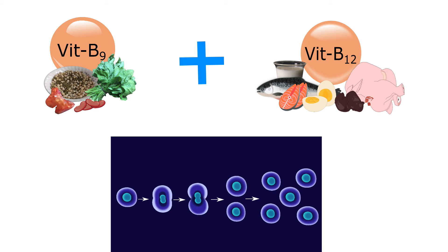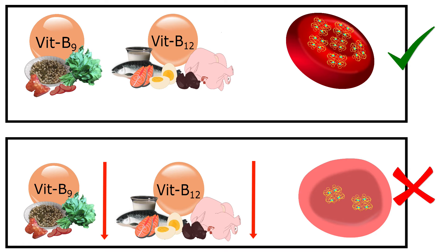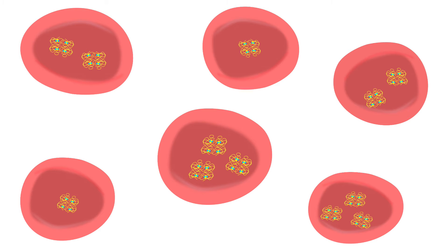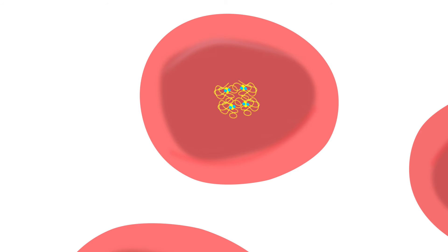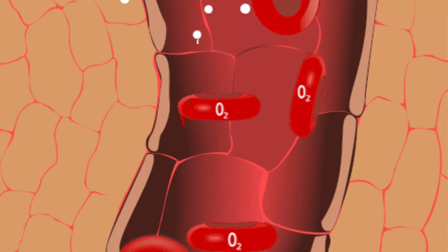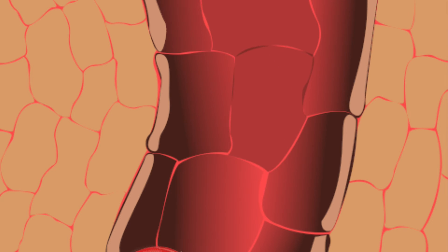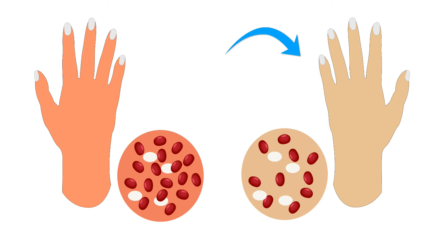Both folate and vitamin B12 are required for normal cell growth and division. In case of their deficiency, red blood cells do not mature or divide properly. As a result, large immature red blood cells are formed, which are few in number and have very low hemoglobin. Since hemoglobin helps transport oxygen to tissues and cells, low hemoglobin levels cause anemia.